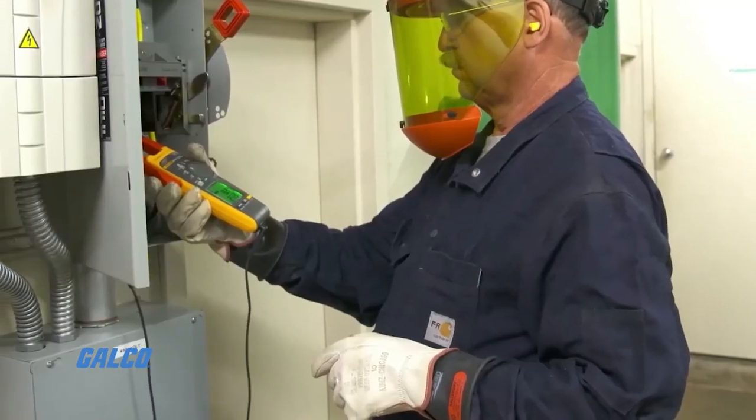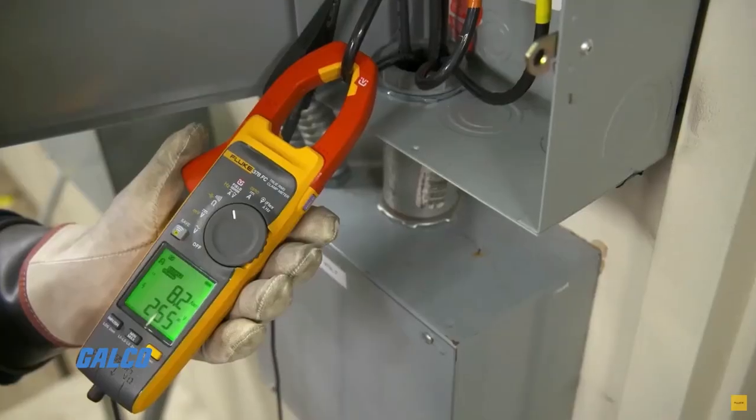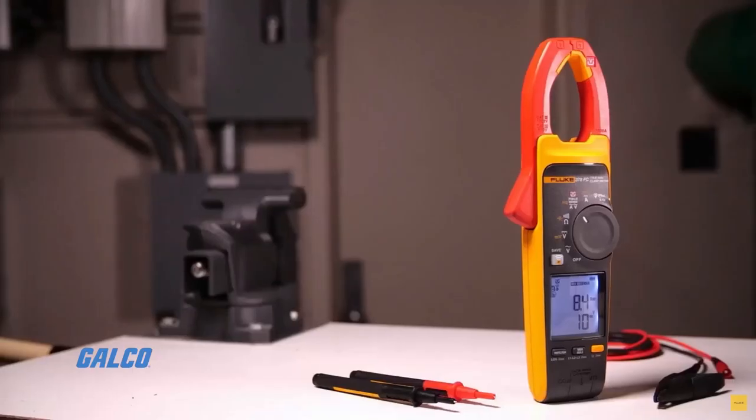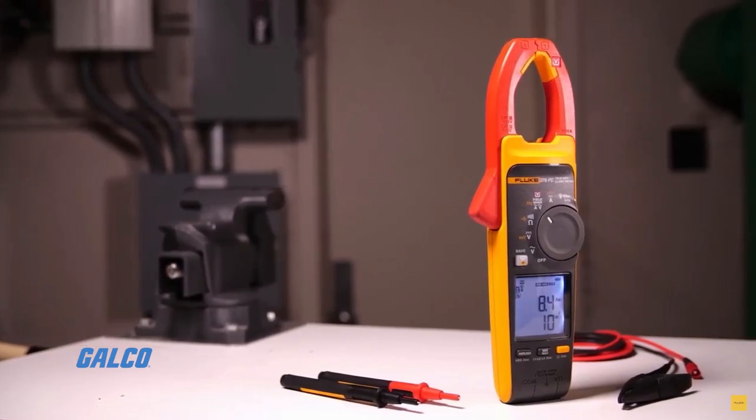In today's how-to video, we will be showing you how to measure current flow in a wire without breaking the circuit. To do so, you will need a clamp-on ammeter ideally suited for current measurements.